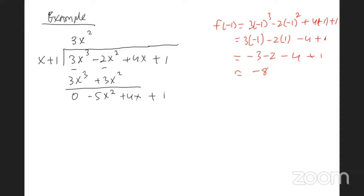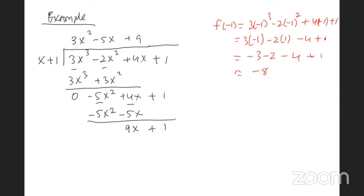Continue: x into -5x² is -5x. Then -5x times x is -5x², and -5x times 1 is -5x. Subtract to get 0, then 4 minus (-5) gives 9x + 1. Finally, x into 9x is 9. Then 9 times x is 9x, 9 times 1 is 9. Subtract and we get negative 8 — confirming our answer.